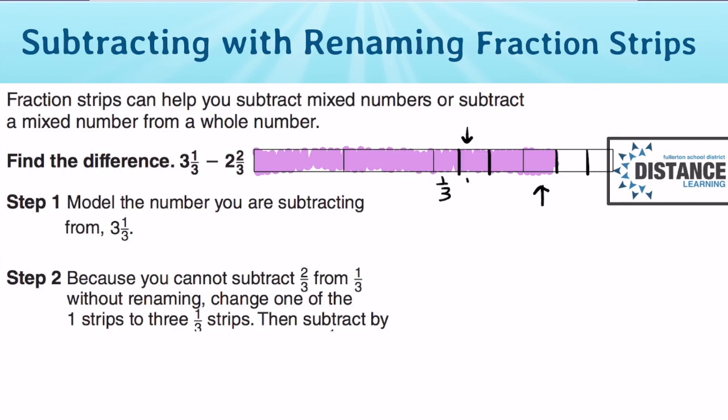So now this is 1/3, 1/3, and 1/3. But it's still part of 3 1/3. Instead of using 3 and 1/3 now, we're using 2 wholes because there's 2 wholes. And now there's 1 part, 2 parts, 3 parts, 4 parts. So now it will be represented as 4/3. Notice that we changed 3 1/3 to now 2 and 4/3.